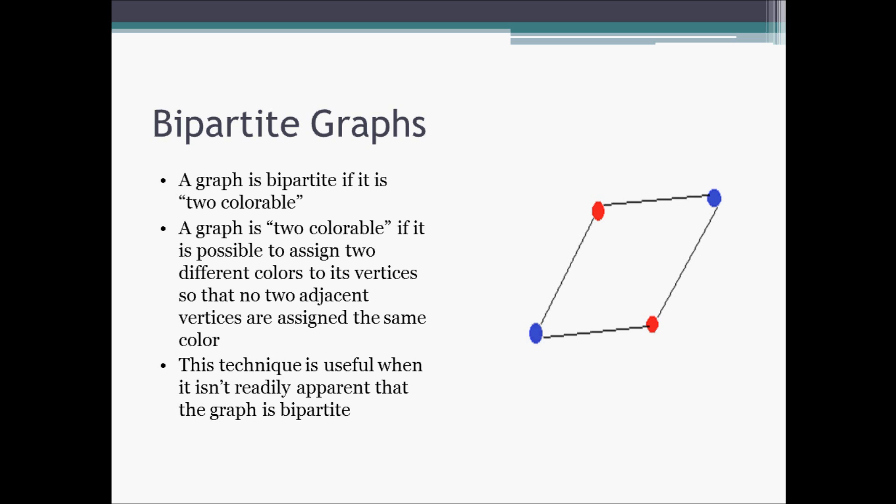Recall that two vertices are adjacent if there is an edge connecting those two vertices. Now let's take the graph on the right as an example. We see that there are two blue vertices and two red vertices. Since the red vertices are only adjacent to blue vertices, and the blue vertices are only adjacent to red vertices, the graph is two-colorable and therefore bipartite. This technique is really useful when you have a more complex graph and it's not readily apparent how to divide that graph into two sets of vertices.